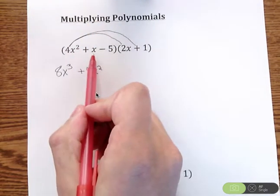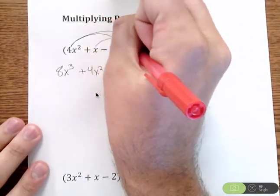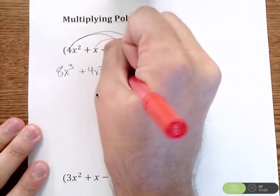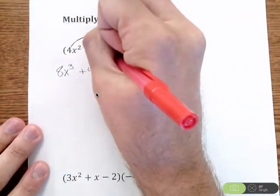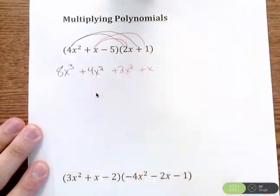Next, I'm going to take the next term, which is x. I'm going to take that and distribute it through. So x times 2x is positive 2x². Then x times positive 1 is just plus x.